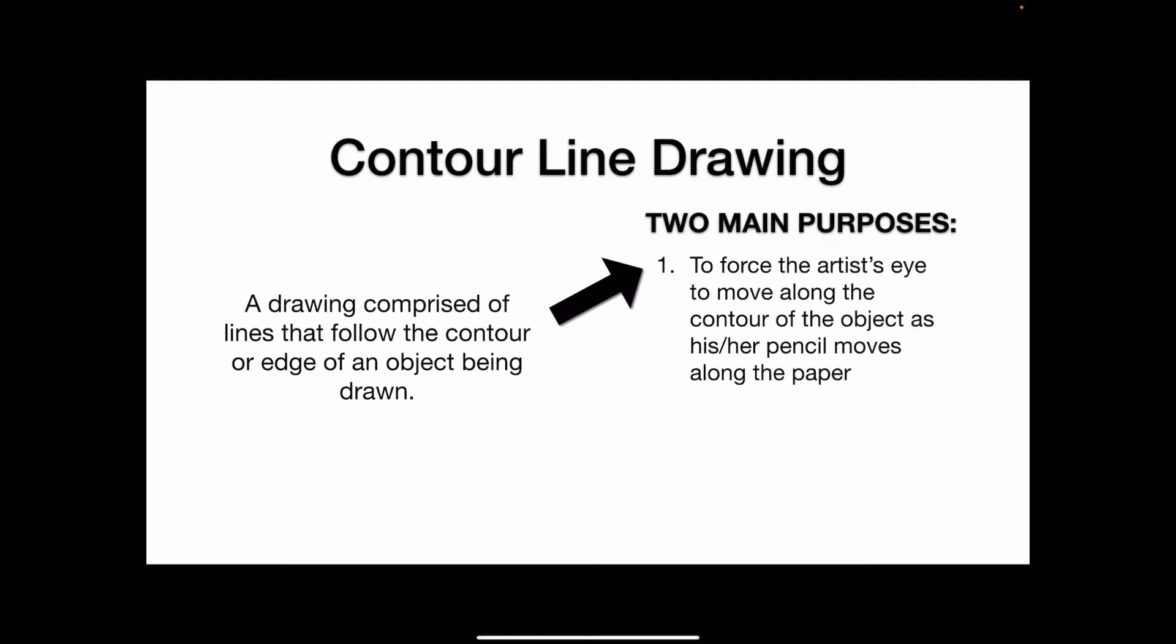The reason we do contour line drawings as artists is because we want to force our eye to move along the contour of the object as our pencil moves along the paper. So whatever our eye is seeing in front of us, that is what we're drawing on the paper.